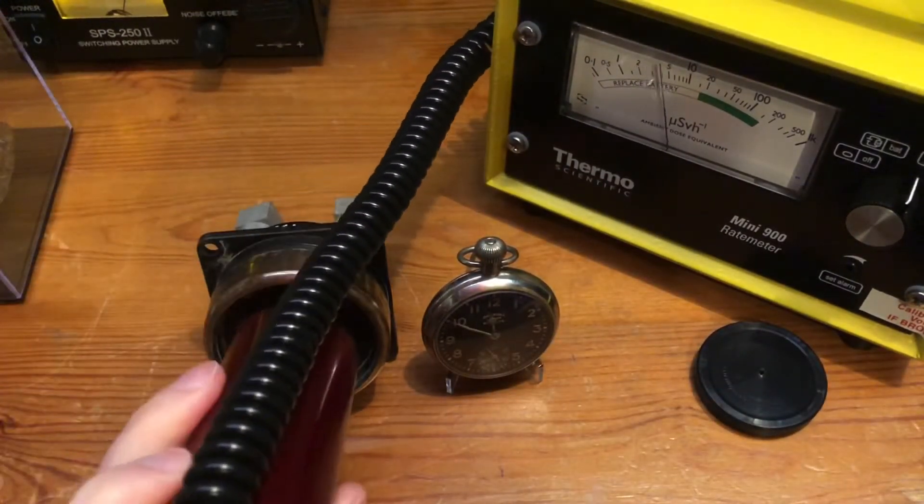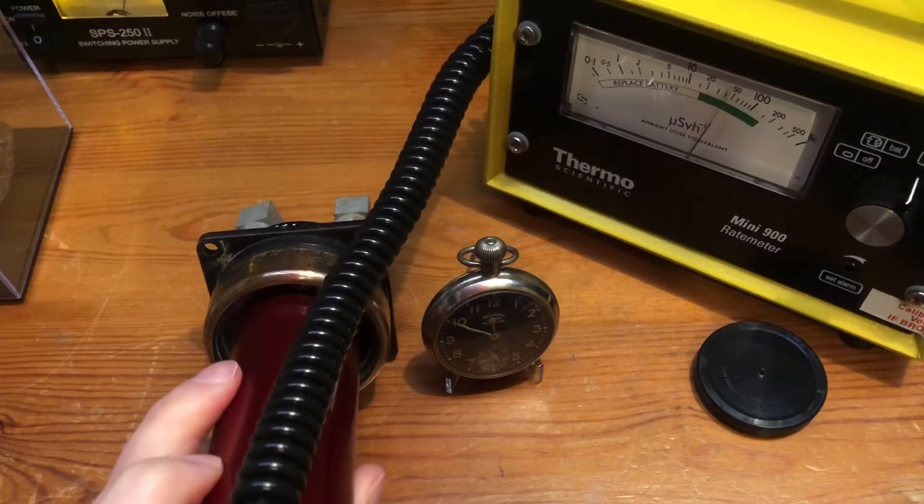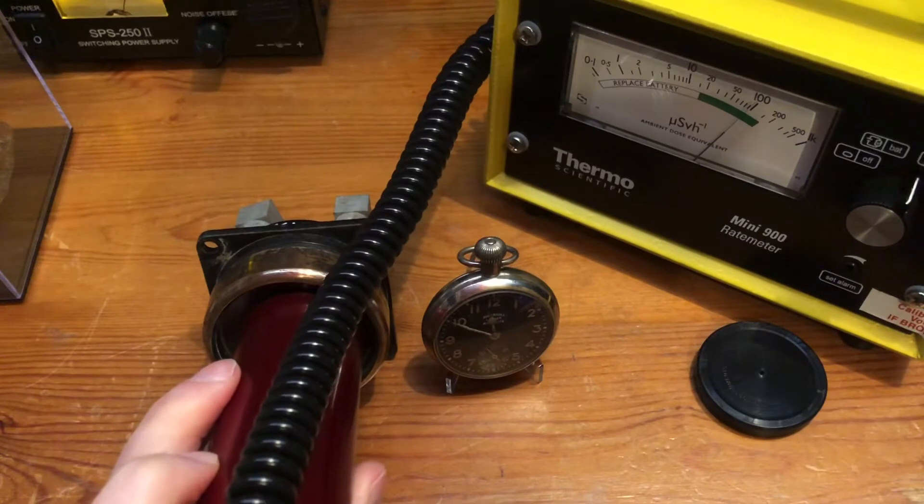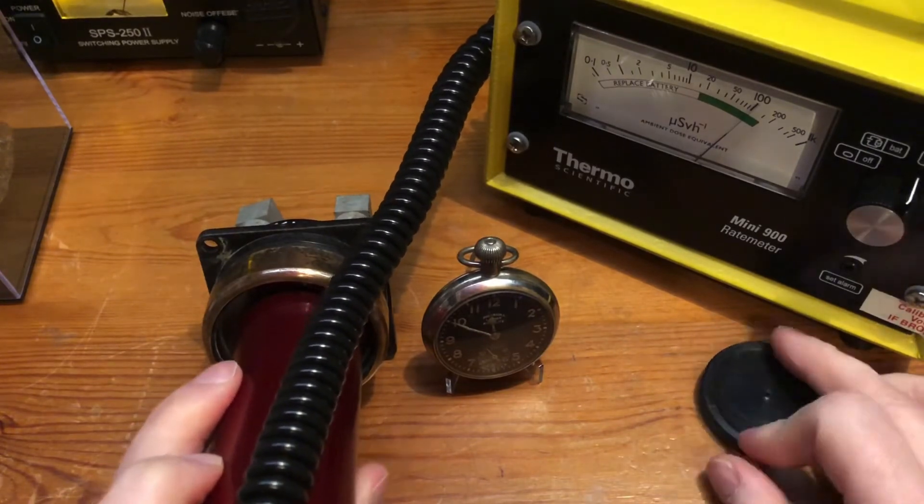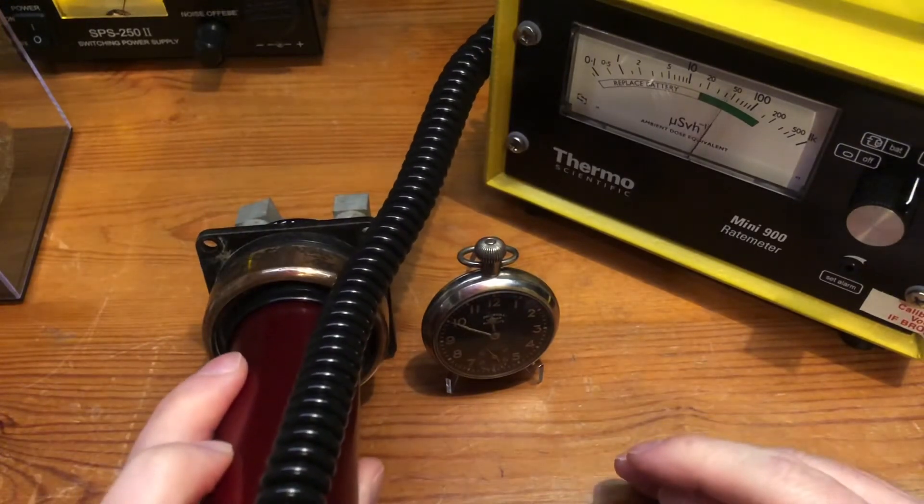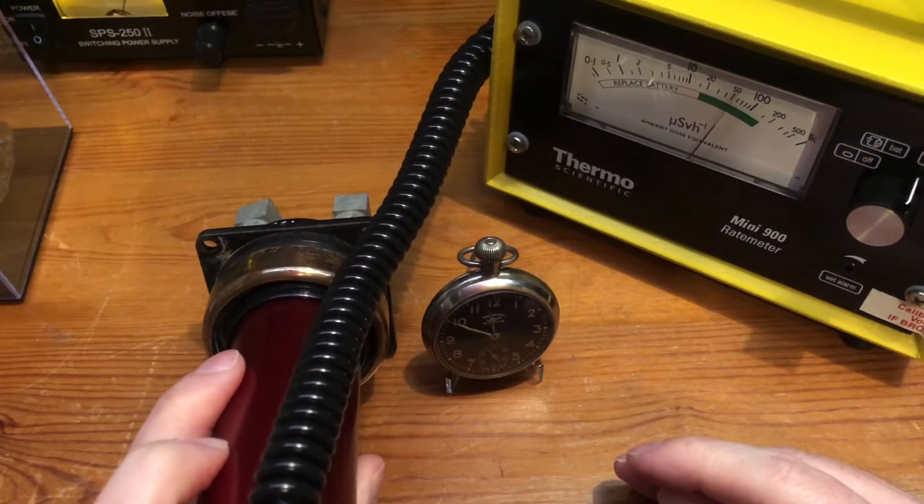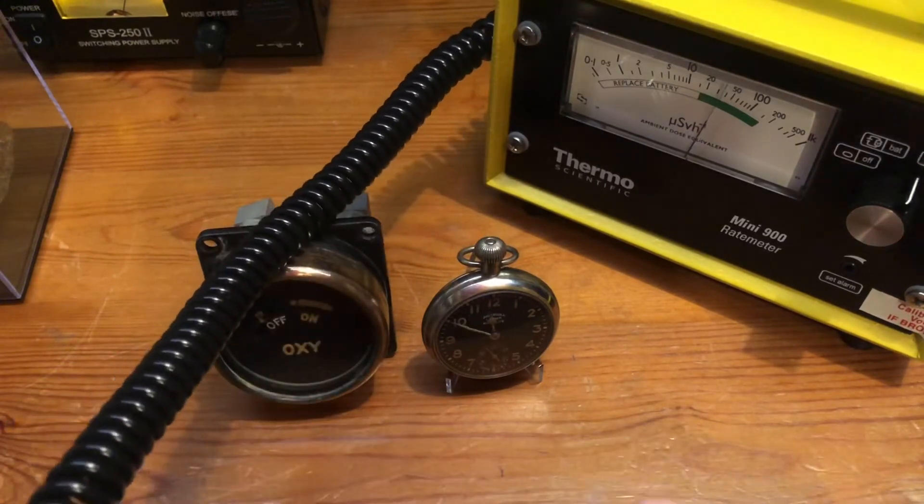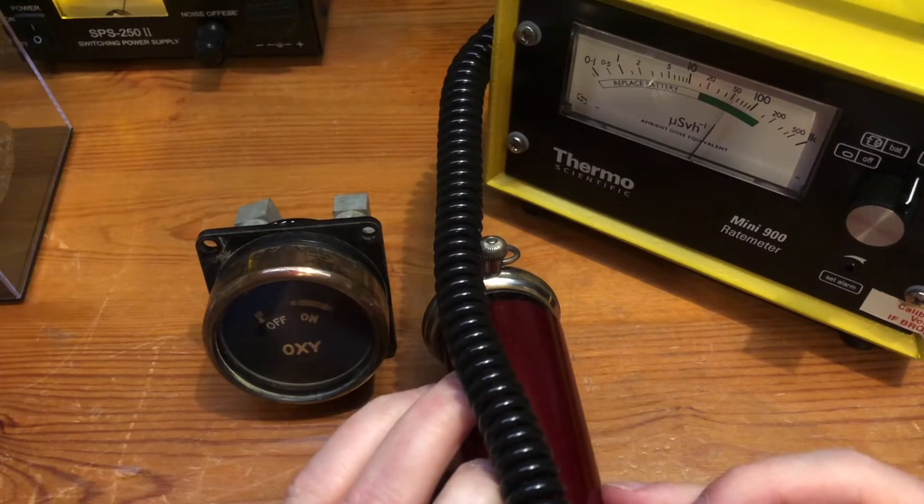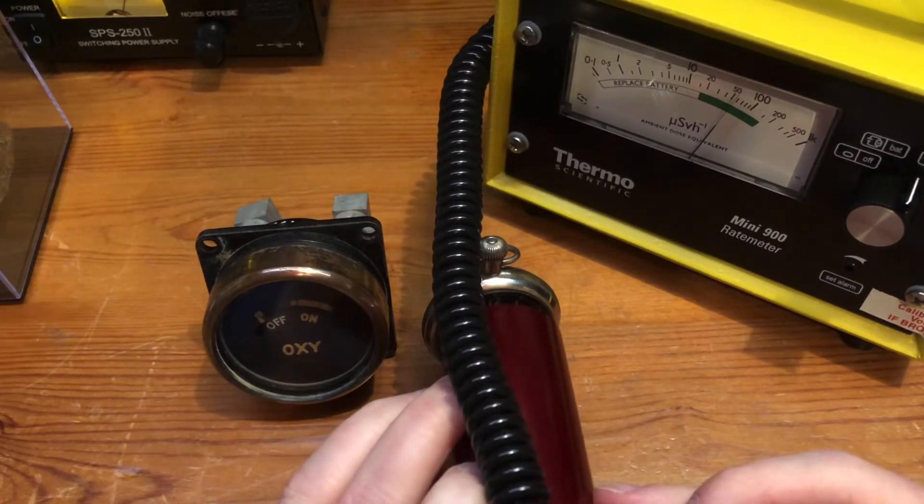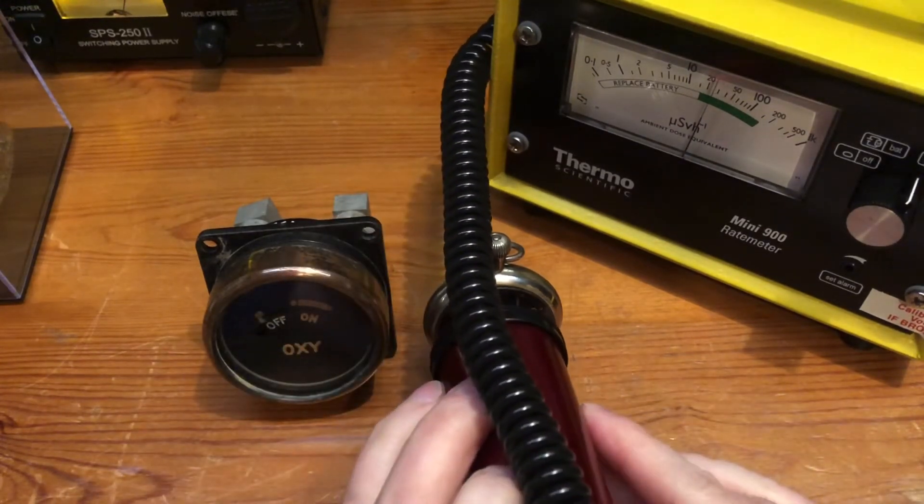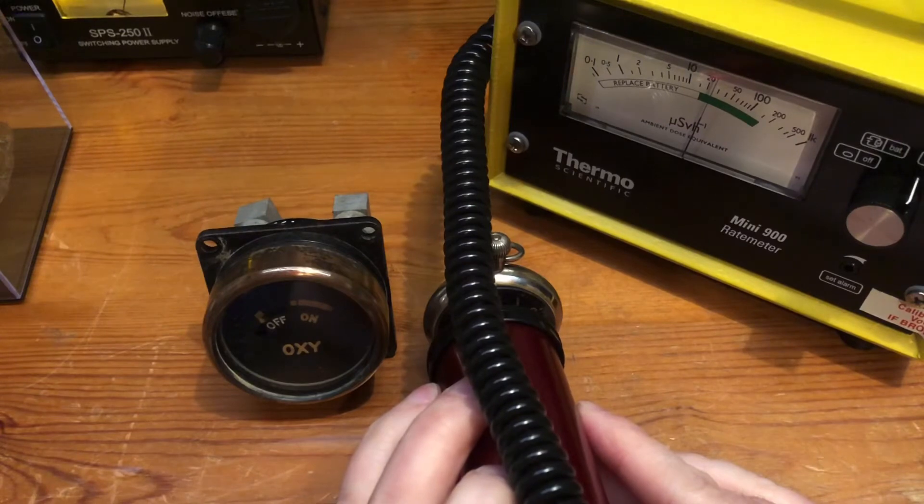So I'll do the oxygen sensor first. Again, you can see there 100 microsieverts, and I'll put the beta shield on. You can see we're down about half that now, 50. And then I'll do the Ingersoll watch. There's obviously a lot less radium paint on this. And then again with the beta shield on, it drops down to 20.